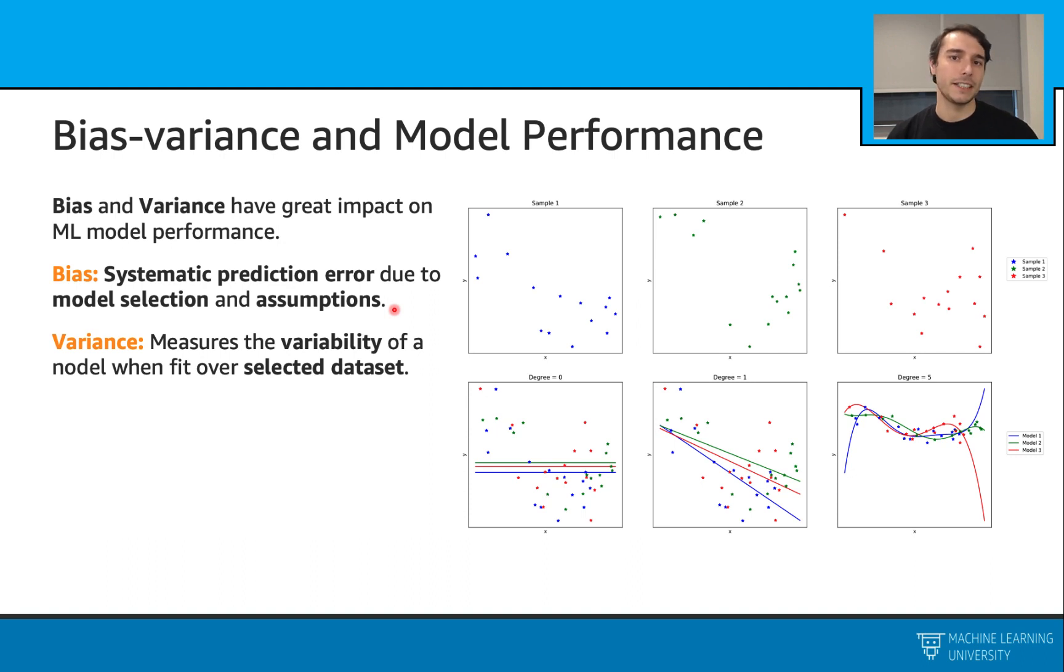Let's try to explain these ideas. Assume that we have a data set, and we can sample multiple data sets from this original data set. Assume that I sampled three of them: blue, green, and red. And then I will have multiple sets of models, and I will fit them on these data sets. First set of models is degree zero, second one is degree one, and the last one is degree five models.